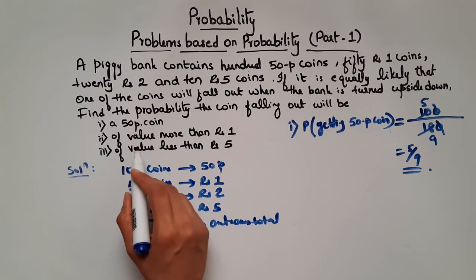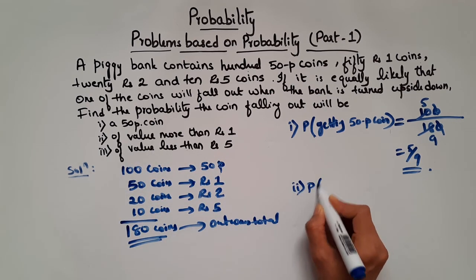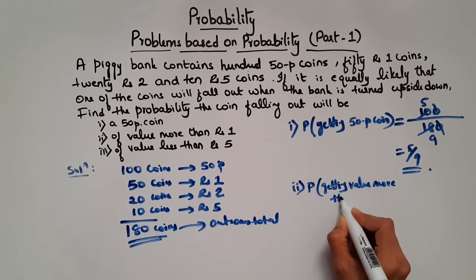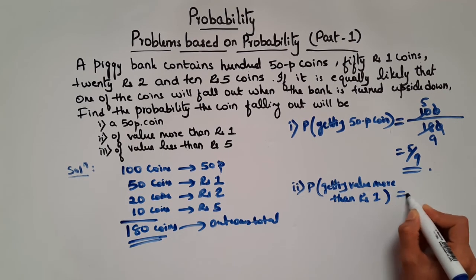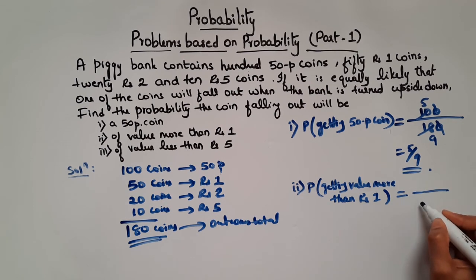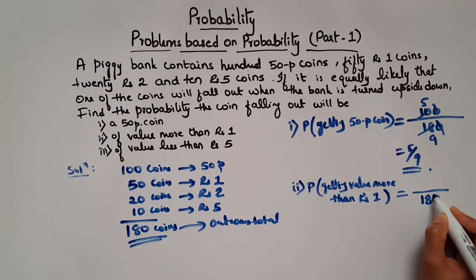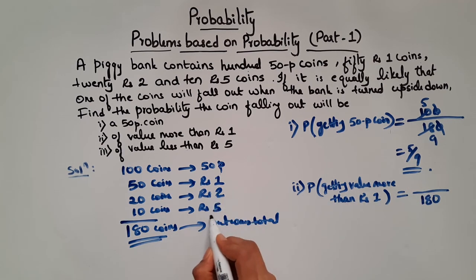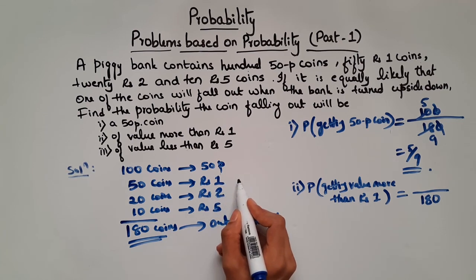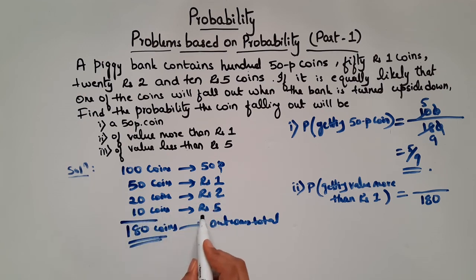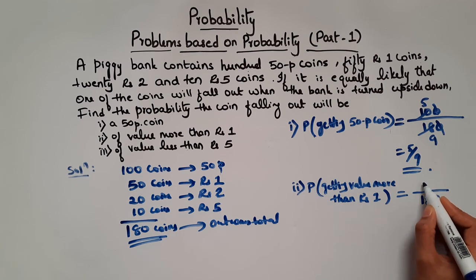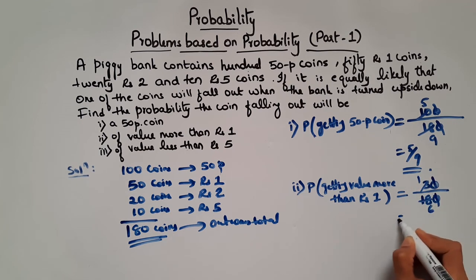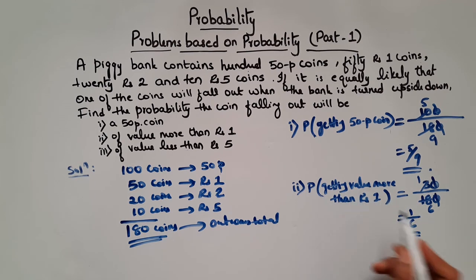Now the probability of getting value more than rupees 1: total possible outcomes is 180. Value more than rupees 1 means rupees 2 or rupees 5 coins. Rupees 1 coins are not included. We have 20 coins of rupees 2 and 10 coins of rupees 5, so 20 plus 10 equals 30 favorable outcomes. So probability equals 30 by 180, which simplifies to 1 by 6.